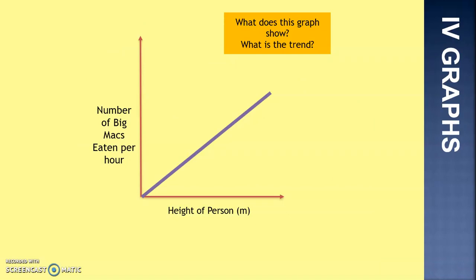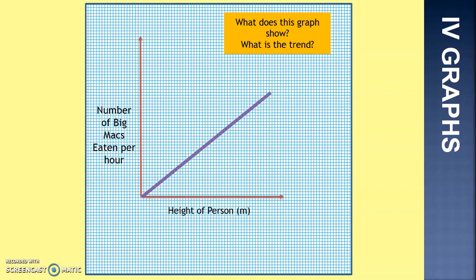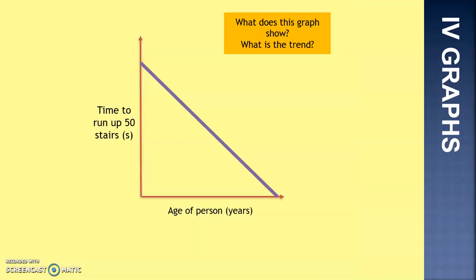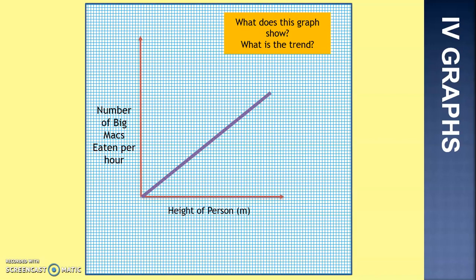So what does this graph show, and what's the trend? Looking again at analysing graphs. From that graph we can see: as the height of the person increases, the number of Big Macs that can be eaten per hour also increases — a positive relationship.